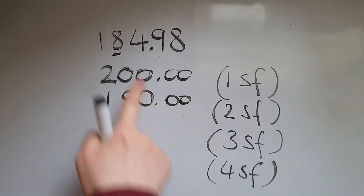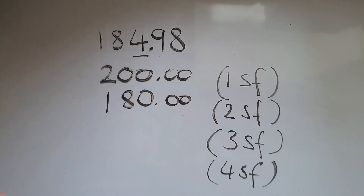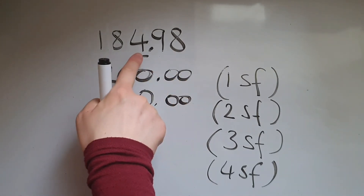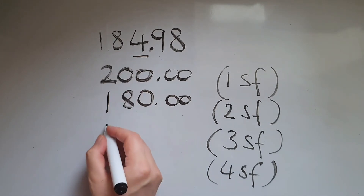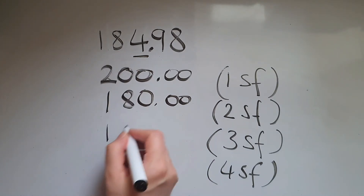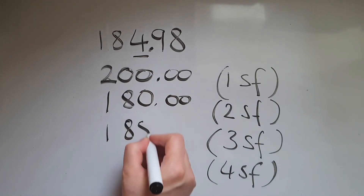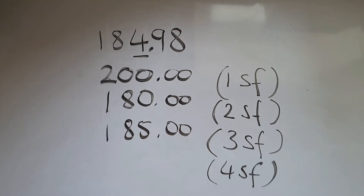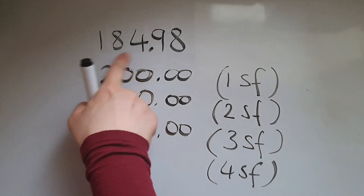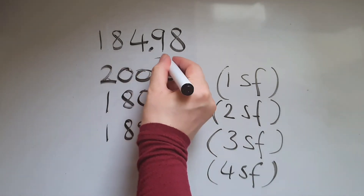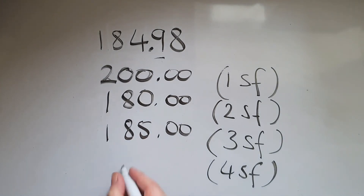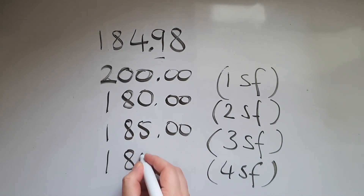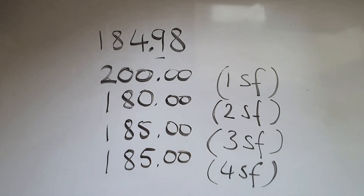Three significant figures: looking at the 9 means we're going to round up, so this becomes 185. Four significant figures: we've got to round up, so that again is 185.00.